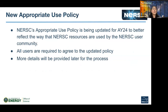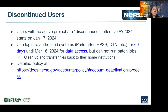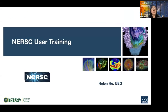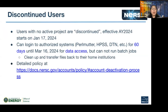New policy for this year: the Appropriate Use Policy is being updated to better reflect how NERSC resources are used by our user community. All users are required to agree to this updated policy. We're still working out the process, so more details will be provided later. For discontinued users, they are marked as discontinued on the first day but still have 60 days to log into all systems for data access — they can clean up and transfer files back to their home institutions. Discontinued users are not allowed to run batch jobs. We also have a detailed account deactivation process policy.